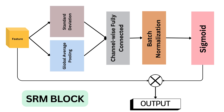One notable improvement in the SRM block is the incorporation of a lightweight channel-wise fully connected layer, replacing the more computationally intensive original fully connected layer. This adjustment aims to enhance efficiency without compromising performance. The versatility of the SRM block is evident in its capacity to improve both the squeeze and excitation modules, and it can be seamlessly integrated after each residual unit, mirroring the adaptability of an SE block in model architecture.